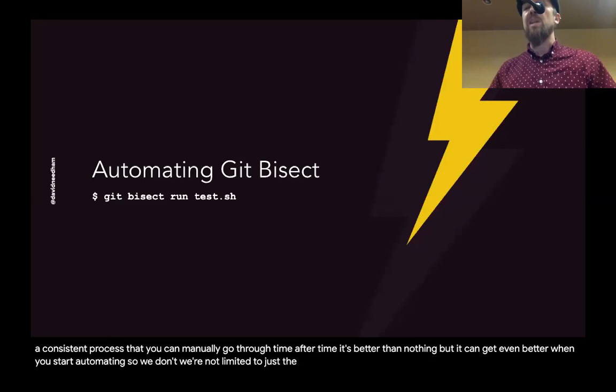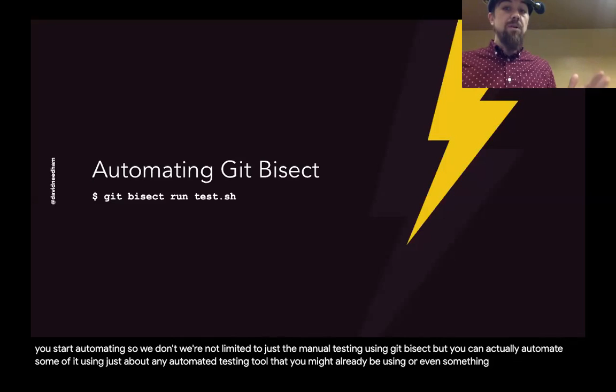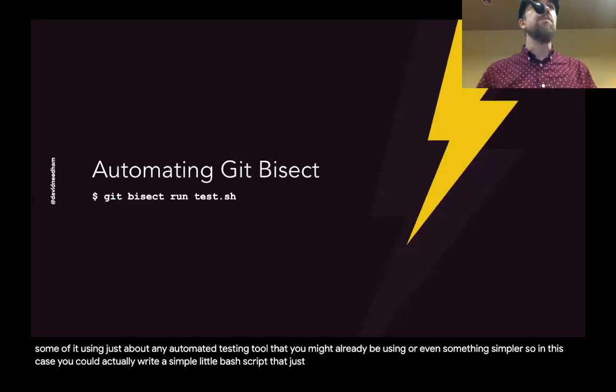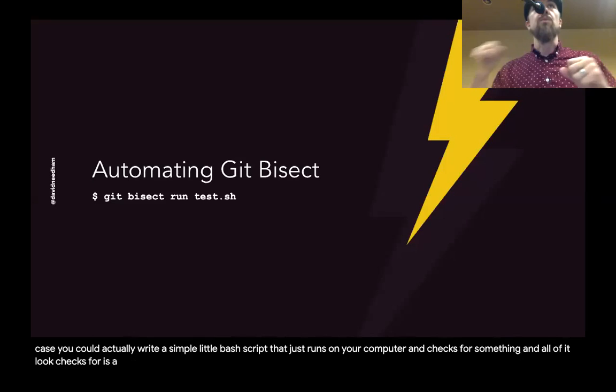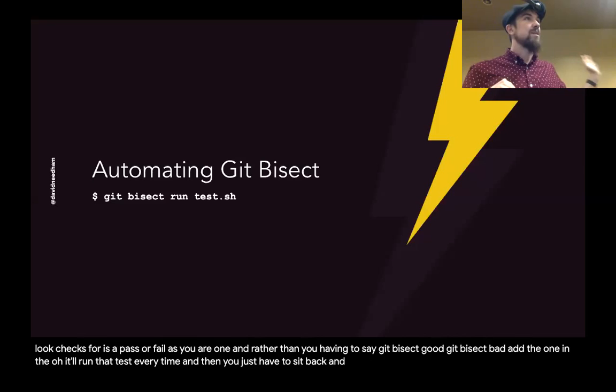We're not limited to just manual testing using git bisect — you can actually automate some of it using just about any automated testing tool you might already be using, or even something simpler. You could write a simple bash script that runs on your computer and checks for something. All it checks for is a pass or a fail — a zero or one. Rather than you having to say 'git bisect good' or 'git bisect bad,' it'll run that test every time and you just sit back and let the test go through everything.